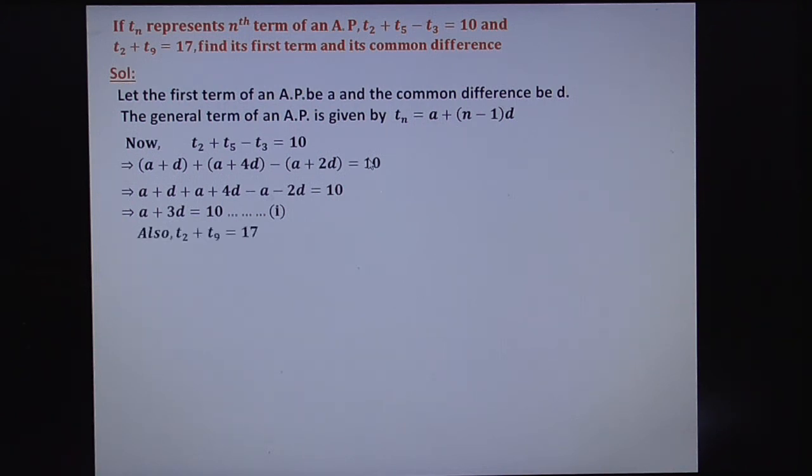Observe the next steps. Take the second one. T2 plus T9 equals 17. This is A plus D plus A plus 8D equals 17.